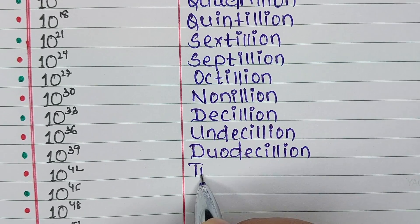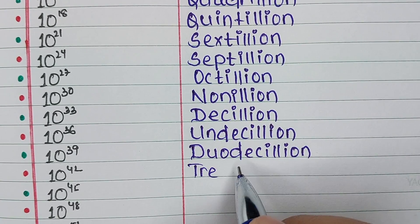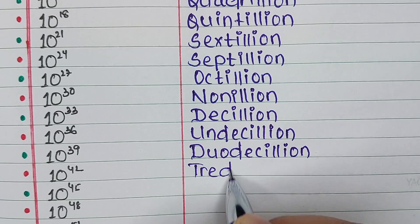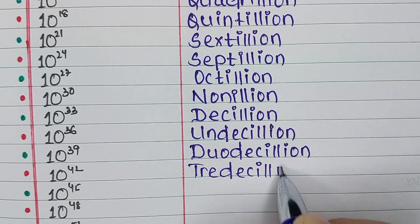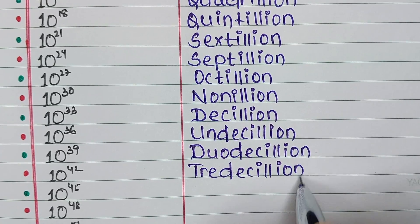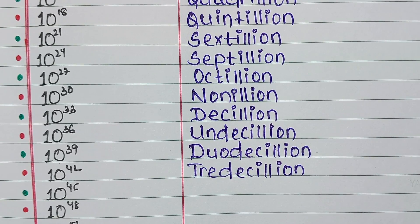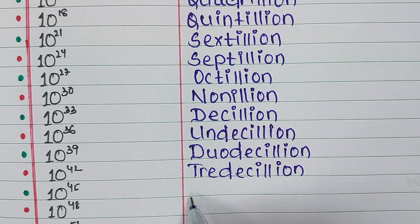Next up is 10 to the power 42. The name is Tredecillion.